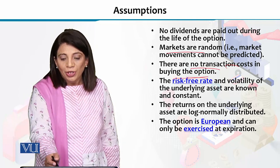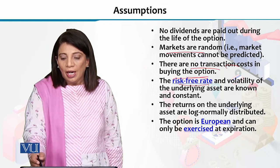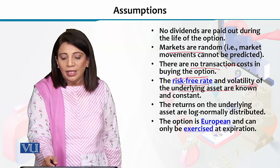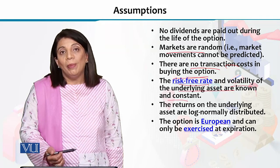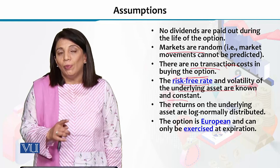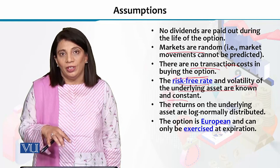The next assumption is that the risk-free rate and the volatility of the underlying asset are already known, and their fluctuations are constant.